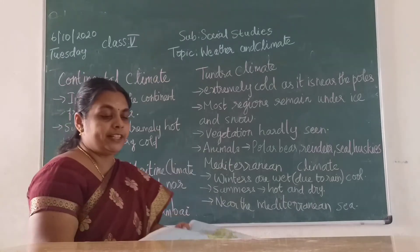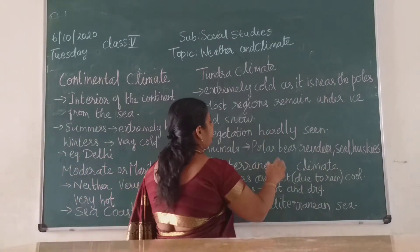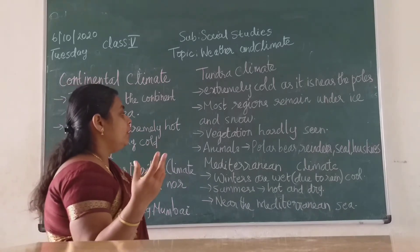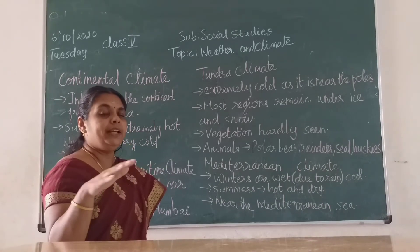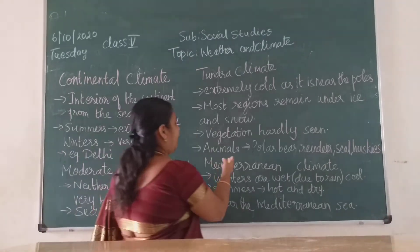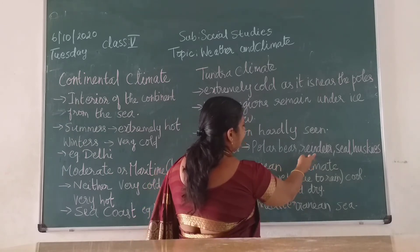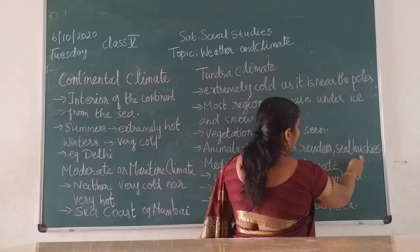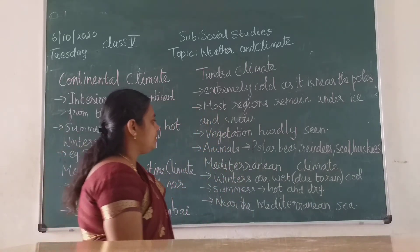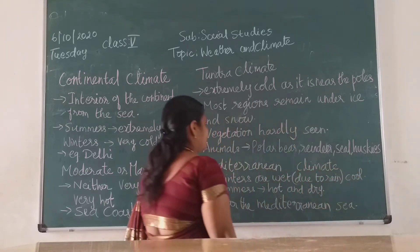As shown in the textbook, the vegetation — plants and trees — is very sparse, hardly seen. Mainly grasslands or small shrubs are visible. The animals you can observe there are polar bear, reindeer, seal, and huskies. These are some of the animals found in the Tundra region.